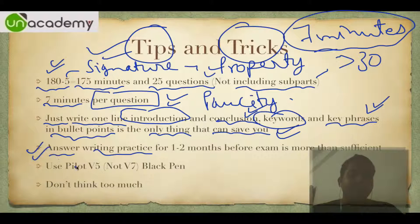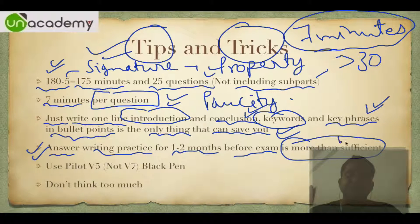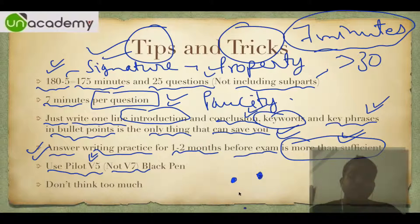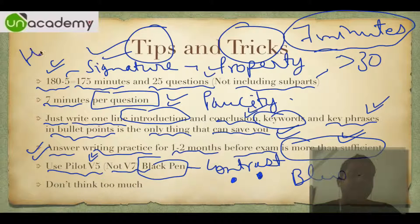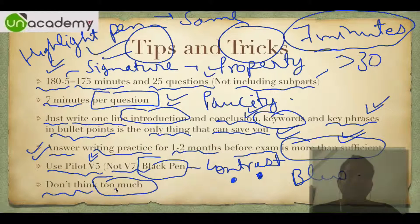Write one line introduction and one line conclusion - that's it. Write keywords and key phrases in bullet points; that is the only thing that can save you with 7 minutes per question. For answer writing practice, starting two months before the exam is more than sufficient. Use a Pilot V5 pen, not V7 - with V7, the ink bleeds through and destroys your answer sheet. Use black or blue pen consistently - do not switch between pens. For highlighting, use the same pen. Do not think too much in the exam - 30 seconds maximum - then just write all the keywords and key phrases.